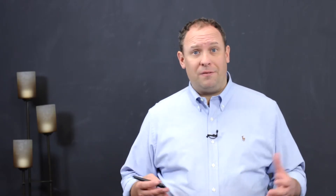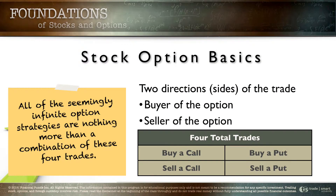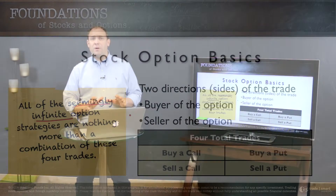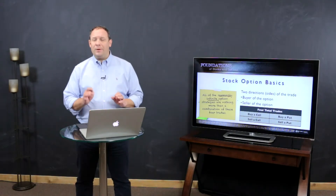People like to think that stock options are very complicated, and they can become complicated. I've got stacks of books over a thousand pages that talk about option strategy. But all those strategies come down to these four simple trades: buy a call, sell a call, buy a put, sell a put. All the seemingly infinite option strategies are really nothing more than a combination of these four trades.